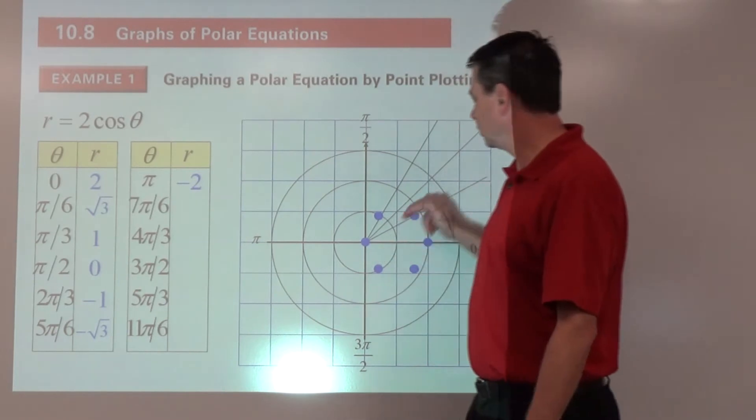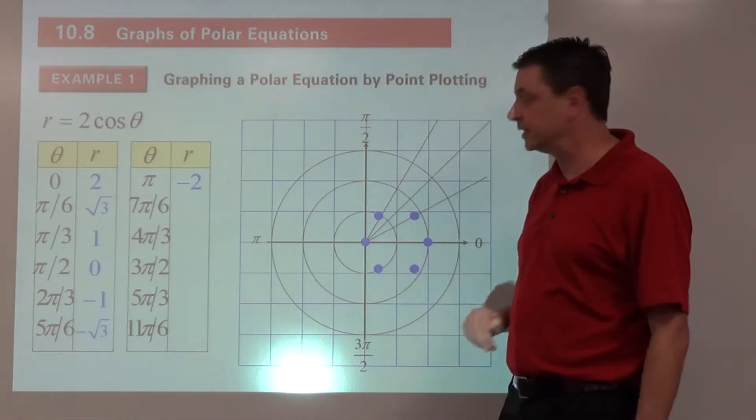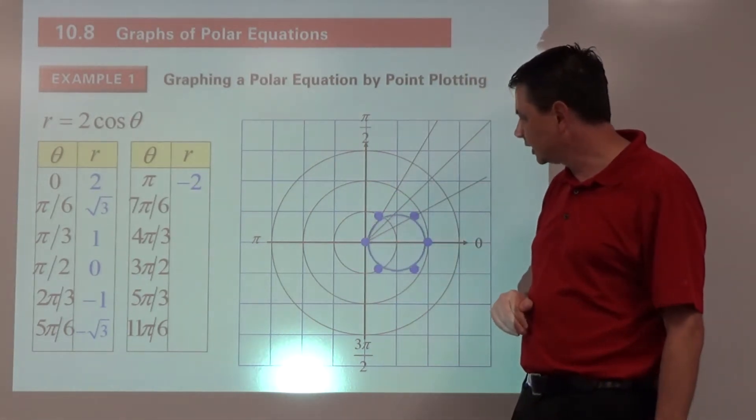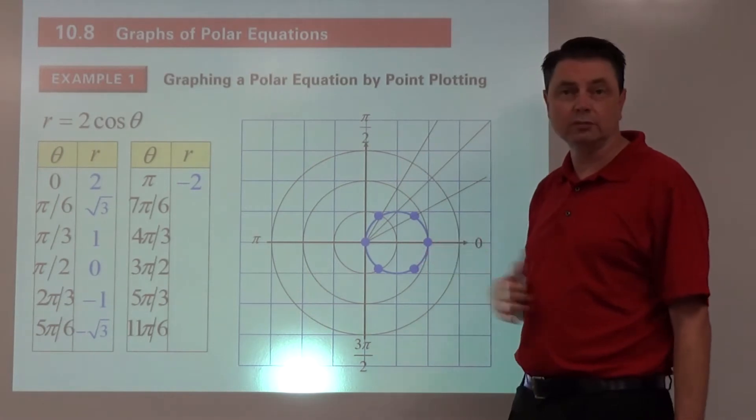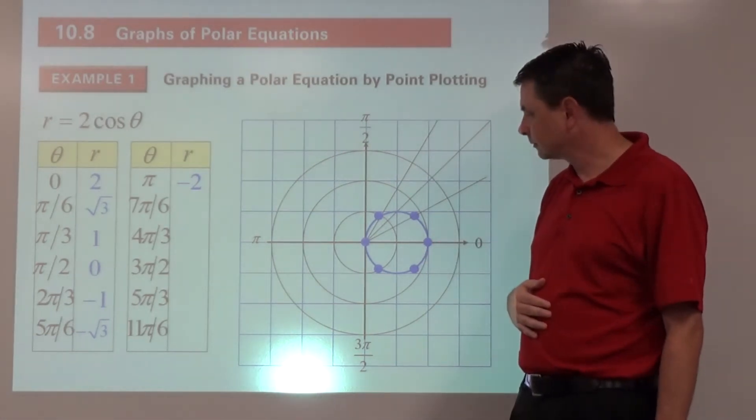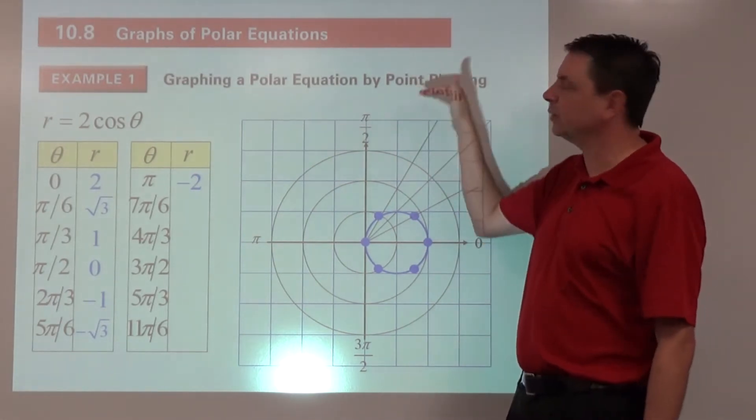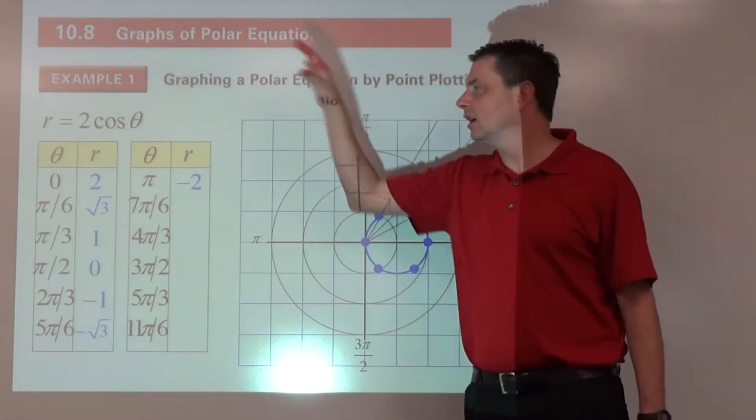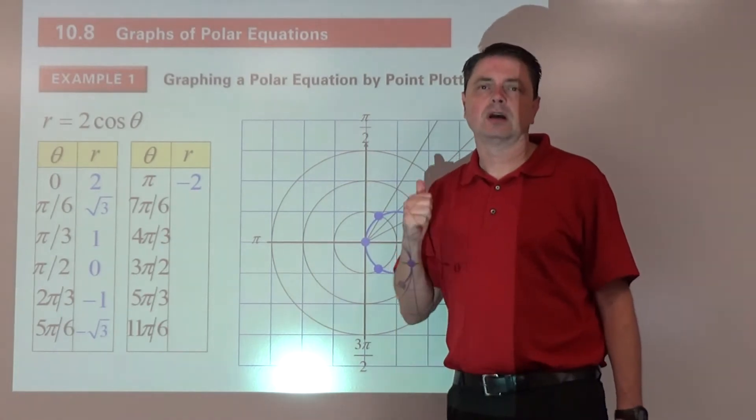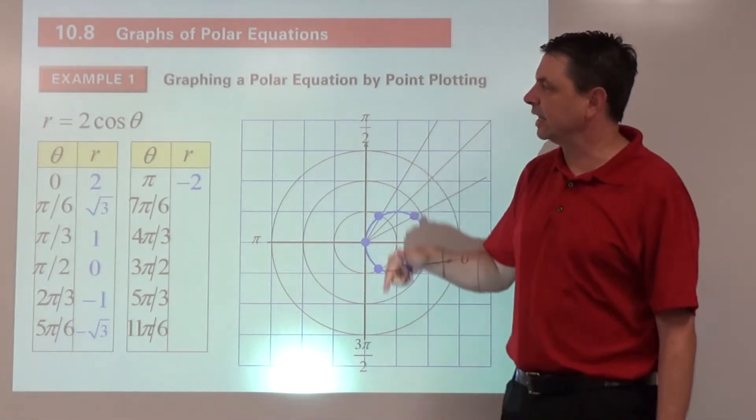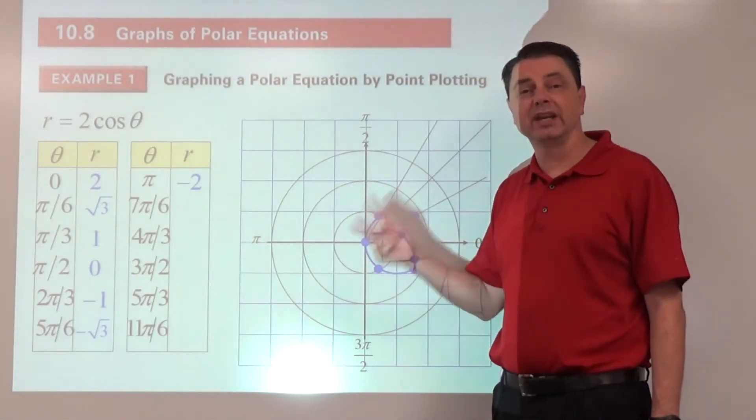I think we would see if we continued, we'd start to land on the same points that we had. We are looking at a circle, a circle that's not centered at the origin. We'll get back to that, but that's one way we can do it, just plotting points, making the table of values, listing thetas, substituting them in and getting the r's.